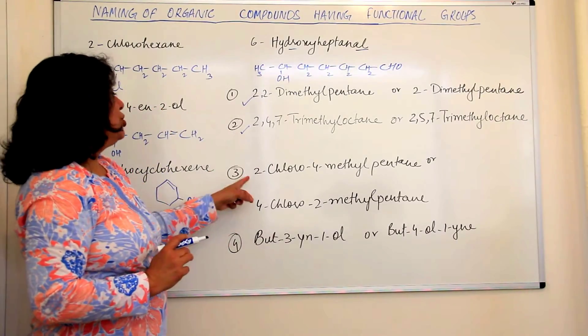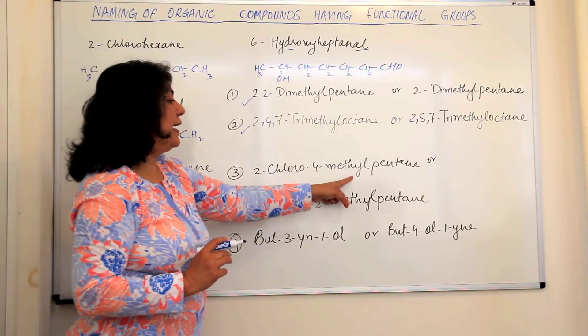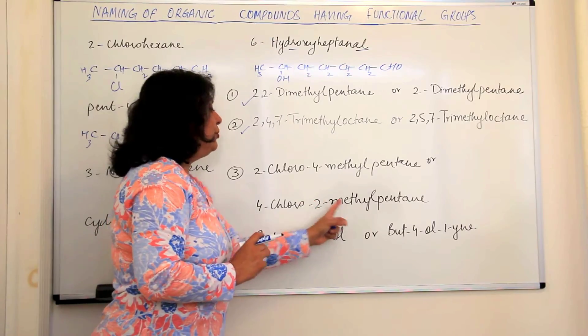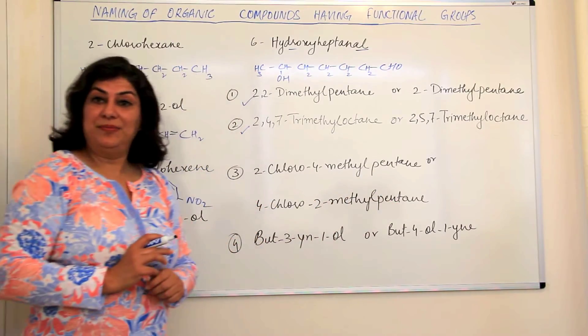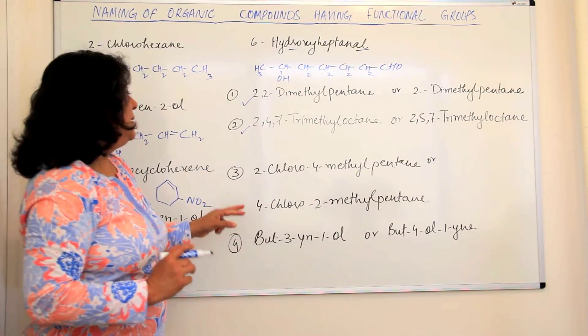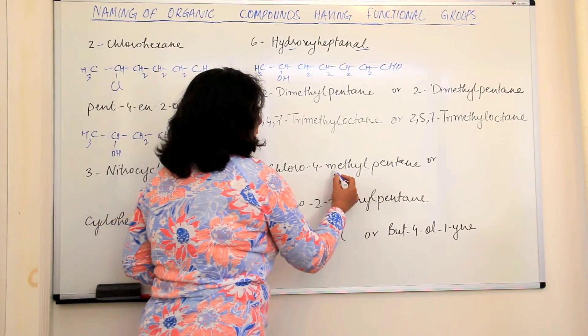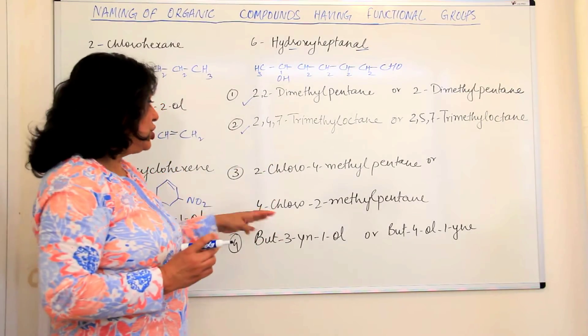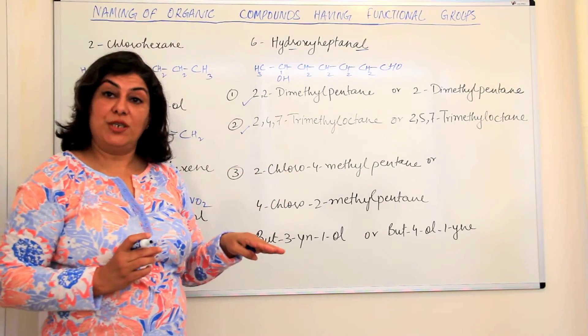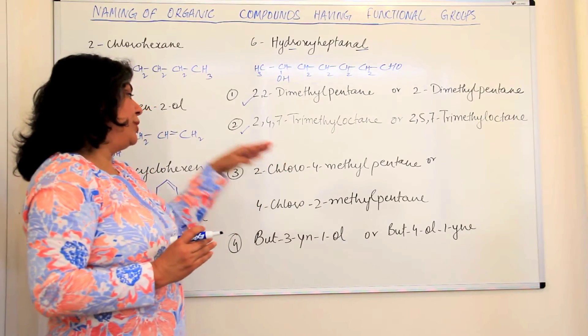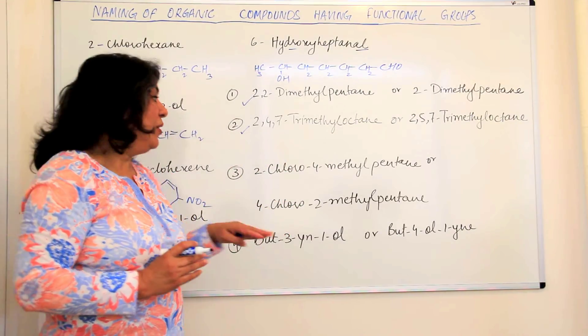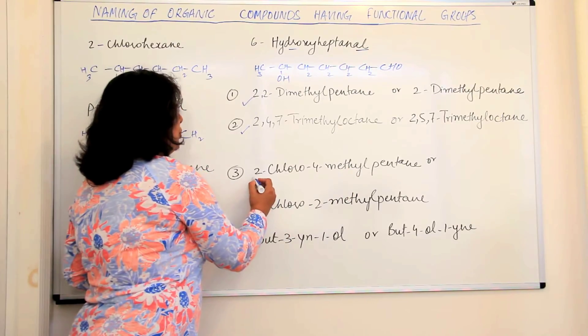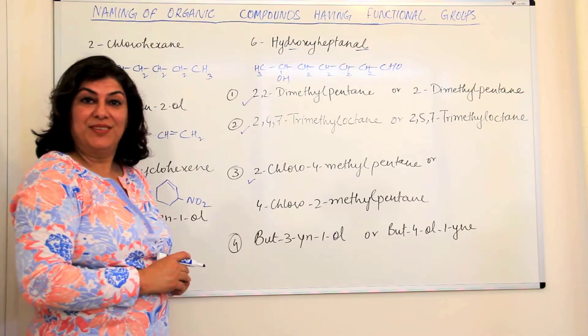The next question is 2-chloro-4-methyl-pentane or 4-chloro-2-methyl-pentane. The methyl group is only a substituent and chloro is a functional group. Therefore the functional group should be given more importance and hence the functional group should have a lower locant. So while you are numbering this 2-chloro-4-methyl, the 2-chloro should be correct.